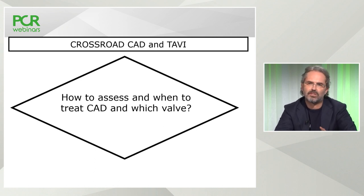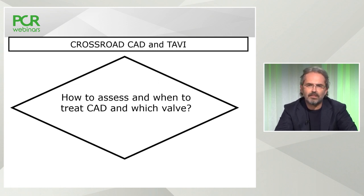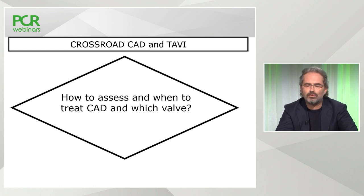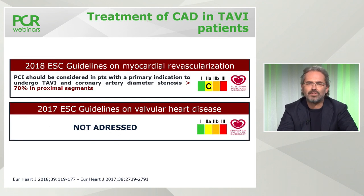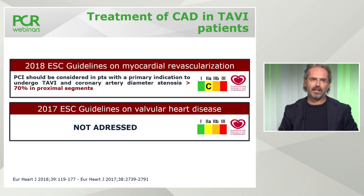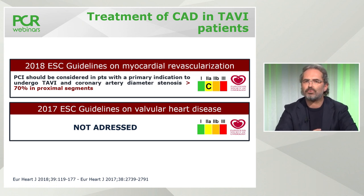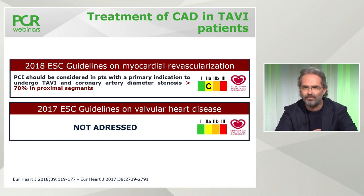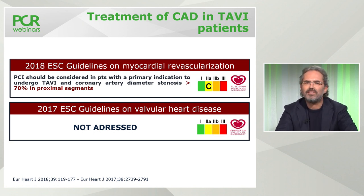This brings us to the first crossroad of the case: how to assess and when to treat this coronary artery disease, and which valve to select. Starting from the 2018 guidelines, with level of evidence C — meaning limited robust data — it's an agreement in the task force that PCI should be considered in patients with a primary TAVI indication and coronary artery diameter stenosis of about 70%. This is very similar to what we recommend for LAD grafting during standard surgical aortic valve replacement.